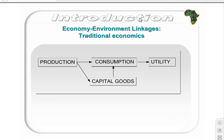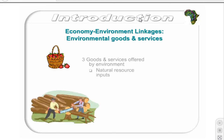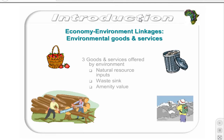This figure represents the traditional linear economy, which does not take the environment into account. The environment provides three basic types of goods and services to the traditional linear economy. These are natural resource inputs, such as timber and agricultural produce, a waste sink, and a source of amenity value. Each of these goods and services, as well as how they relate to the economy, are discussed in further detail below.